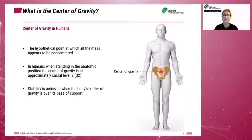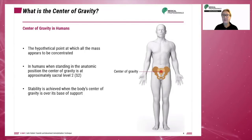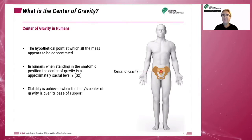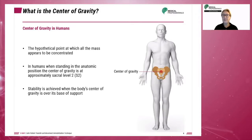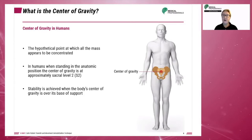The center of gravity in humans is the hypothetical point at which all the mass appears to be concentrated. The center of gravity depends on position. In humans, when standing in the anatomic position, the center of gravity is approximately at the sacral level 2, or S2. The point differs slightly between men and women and will be higher for children. The body is most stable when the body's center of gravity is located over its base of support, meaning that for safe and stable lifting, the center of gravity must always be over the base of support.